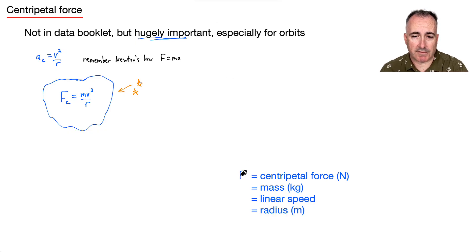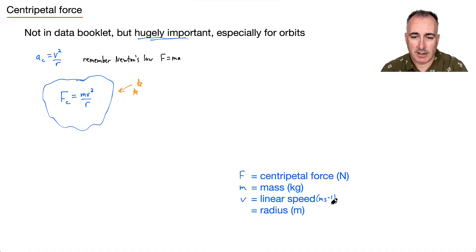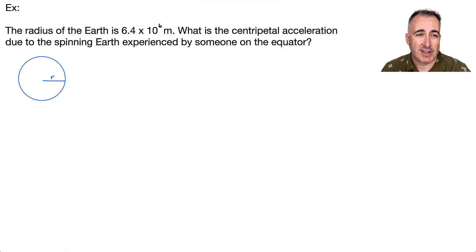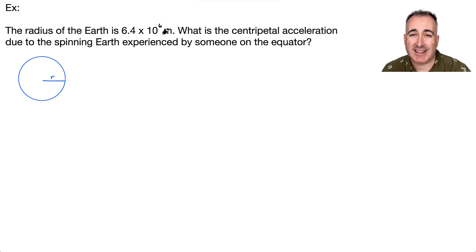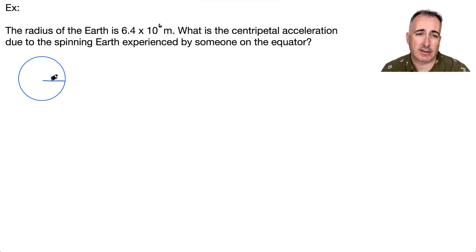So we have F as the centripetal force in Newtons, M as the mass, V as the linear speed in meters per second, and R as the radius in meters. Now let's look at an example: the radius of the Earth is 6.4 times 10 to the 6 meters, and we're asking for the centripetal acceleration due to the spinning Earth experienced by someone on the equator.